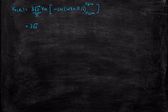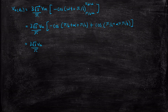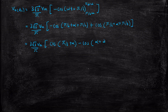This expression can be written as (3√3 Vm / π). Substituting the upper and lower limits: minus cos(pi by 2 + alpha + pi by 6), and since minus of minus is plus, for the lower limit you get cos(pi by 6 + alpha + pi by 6). Taking LCM and simplifying these two terms, you get cos(pi by 3 + alpha) minus cos(alpha + 2pi by 3).